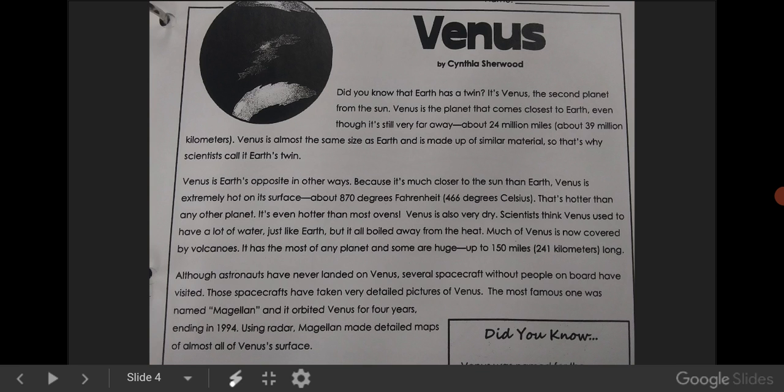Venus is also very dry. Scientists think Venus used to have a lot of water, just like Earth, but it all boiled away from the heat. Much of Venus is now covered by volcanoes. It has the most of any planet, and some are huge. Up to 150 miles, or 241 kilometers long.